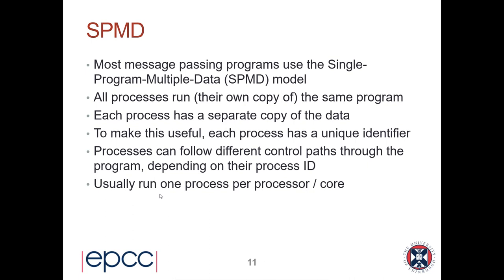Once you know your unique identifier, you can do different things. Although you're running a copy of the same program, the two copies are identical except that if they ask for their unique identifier they get different numbers. In MPI this is called the rank. Once you have the rank, a process can follow completely different control paths — you can say 'if I'm process 1, do something; if I'm process 2, do something completely different.'